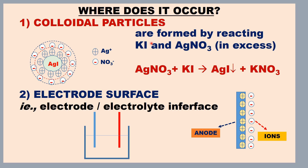There are two examples. One: colloidal particles. For example, silver iodide colloidal particles are formed by reacting KI and AgNO3. In the excess of AgNO3, these colloidal particles are formed. Let us consider all the colloidal particles are charged; because of their charge, they are stable.